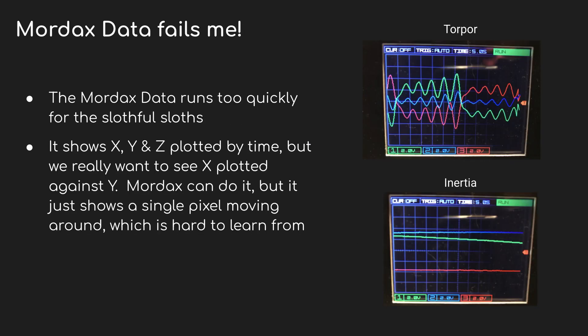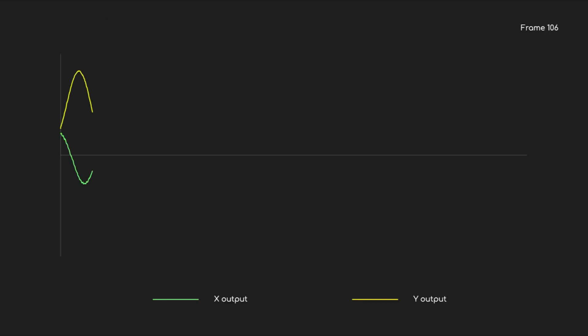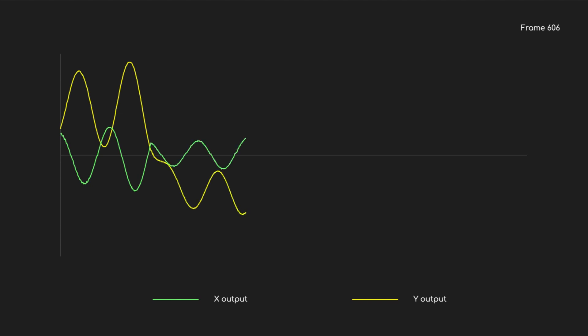Now's the point where I usually fire up the Mordax Data and show you the oscilloscope as things happen. But sloths run so slow, it's hard to get a good idea of how things change over time. Torpor, the fast one, isn't too bad. But look at inertia — that's a minute across the screen on the oscilloscope and it hardly changes at all. So instead, I wrote a bit of software to replace the oscilloscope. Now we can see the X and Y changing over time. This is real data — I've just sped it up so we can follow it easier.